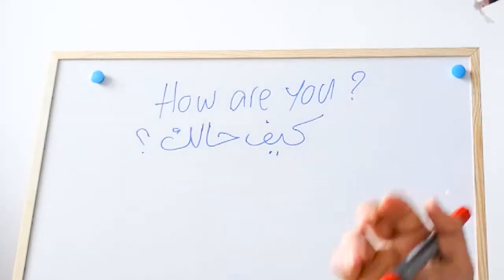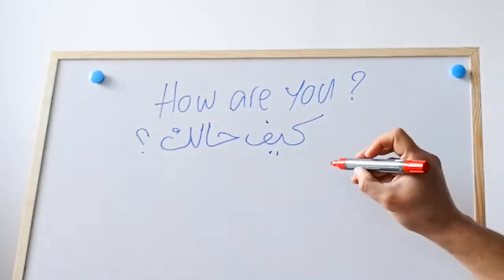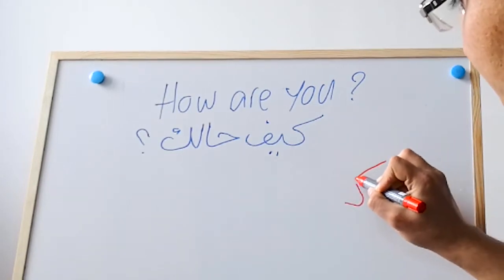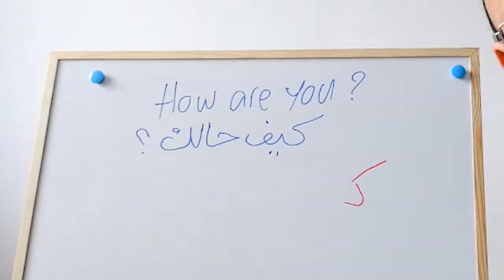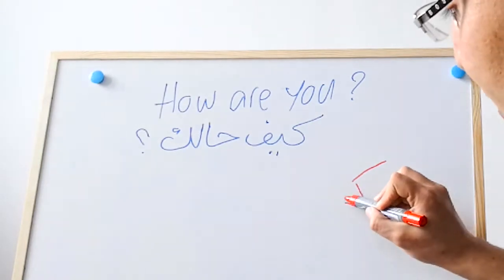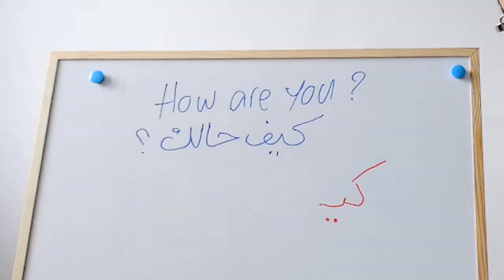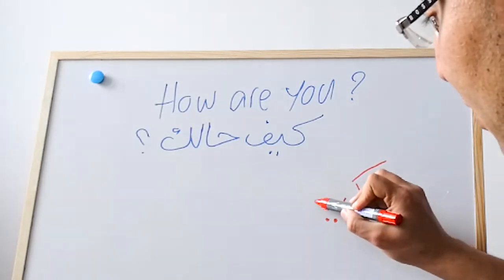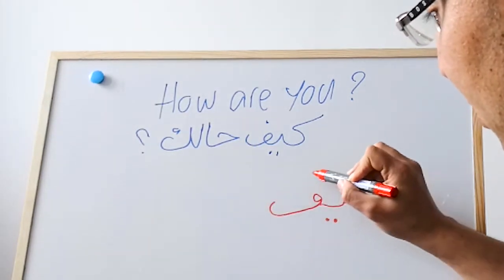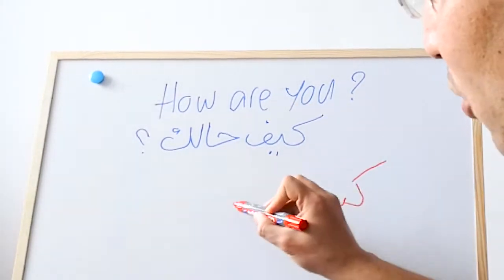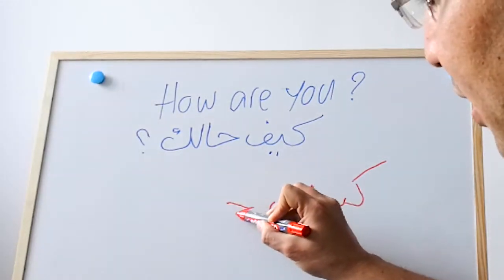So we will start by writing like this, then... then... كيف (kaif)... حالك (halak)... is like this.